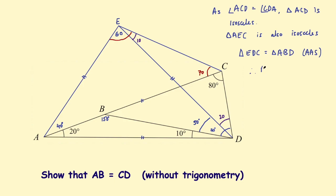So therefore we can say that AB equals side CD. And we're done.